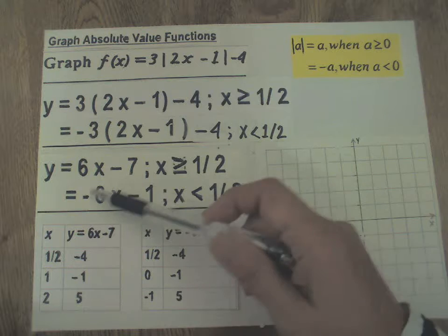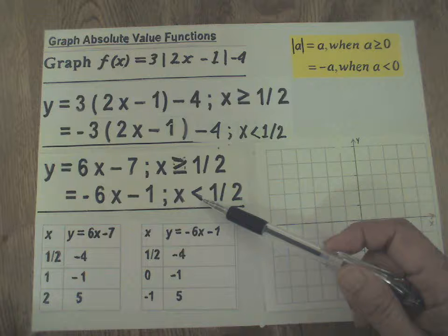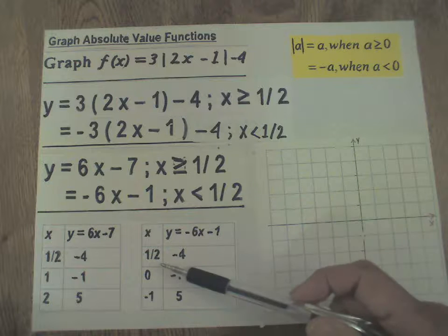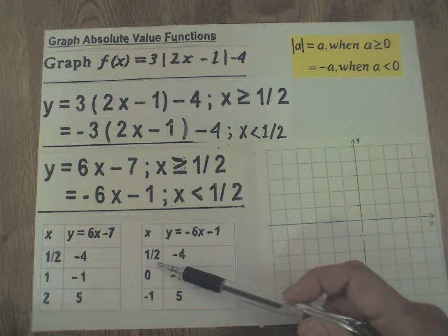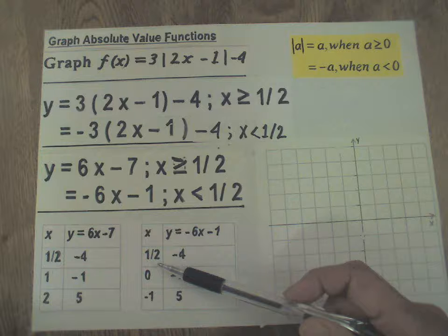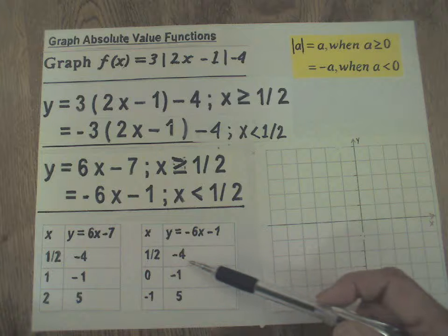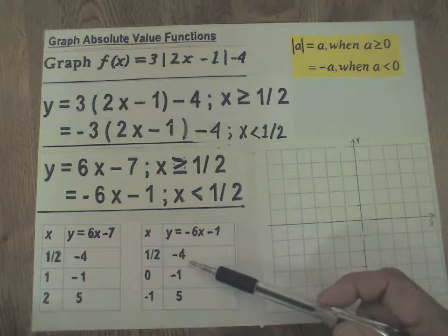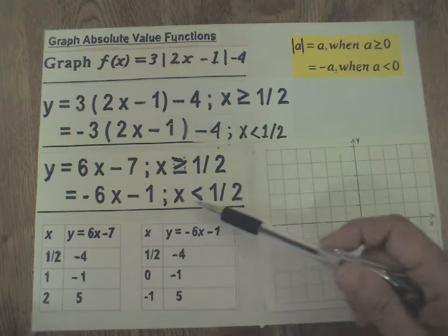For this line, note x has to be less than 1/2, so you need to give values less than 1/2. But what do I have over here? I'm starting with 1/2. The reason is we need to start graphing somewhere. So this is what we will do. We will plot this point 1/2, -4, but we will draw an open circle there indicating that it is not a point on the graph of this line.